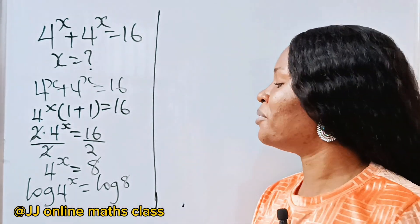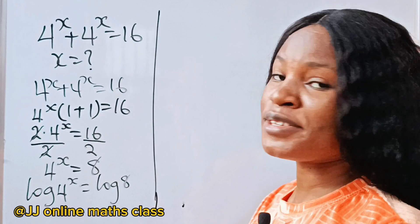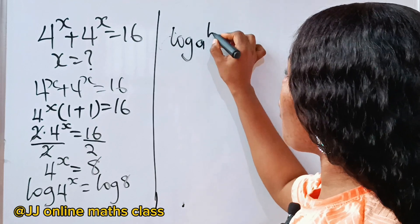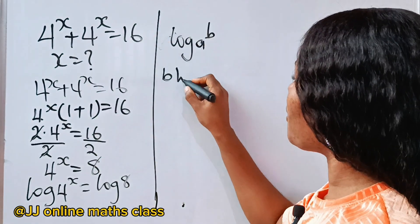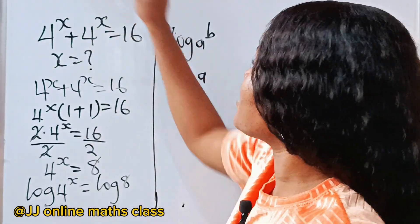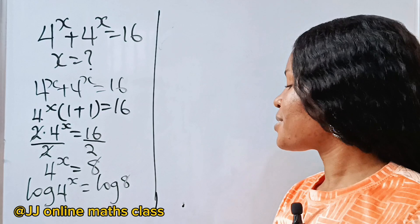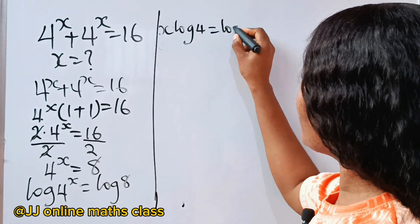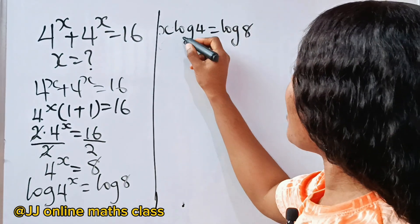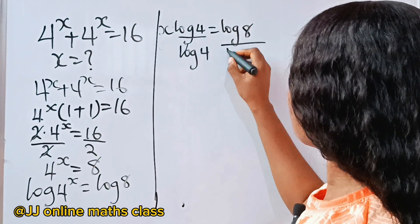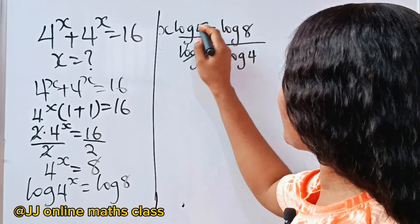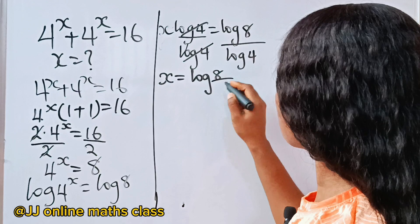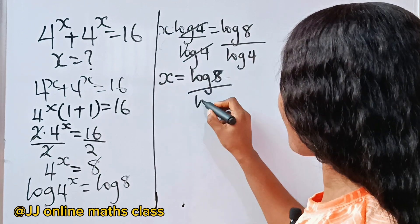Using the power rule of logarithms, we can bring the exponent down. According to the log power rule, if you have log a to the power of b, then b comes down to multiply log a. Applying that here, x comes down to give us x log 4 equals log 8. Now dividing both sides by log 4, we are left with x equals log 8 divided by log 4.